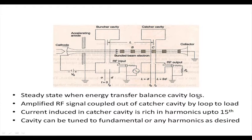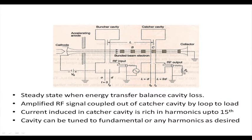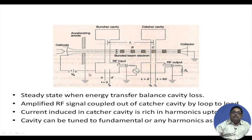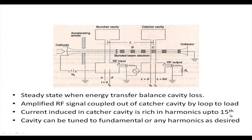In steady state, when energy transfer balances cavity loss, the amplified RF signal is coupled out of the catcher cavity. The electron beams are collected to complete the circuit. The current induced in the catcher cavity is rich in harmonics up to the 15th. The cavities can be tuned to the fundamental or any harmonic as desired.